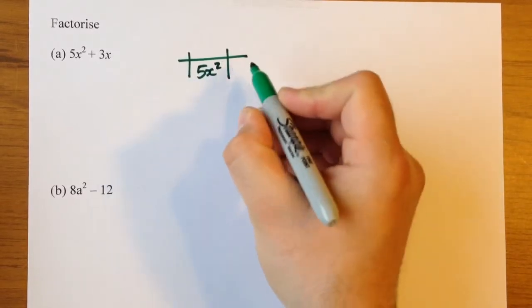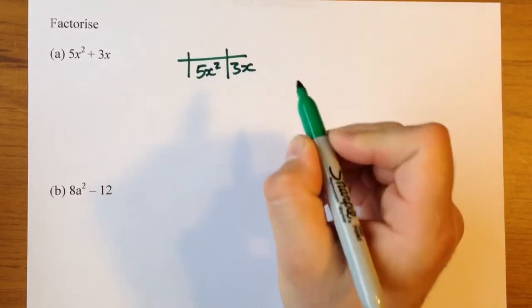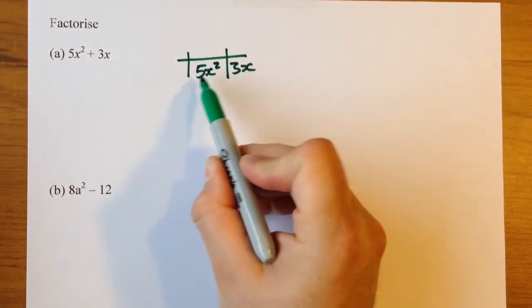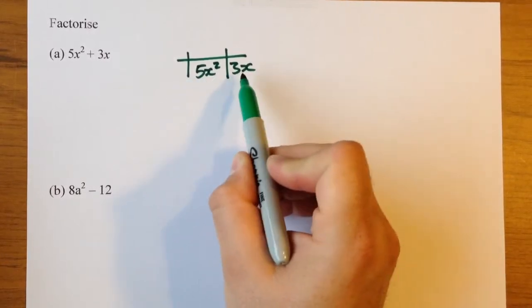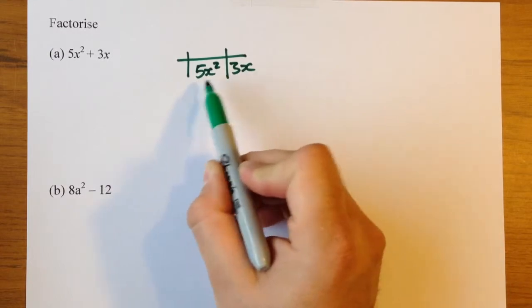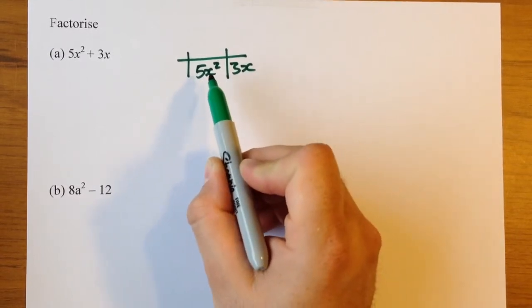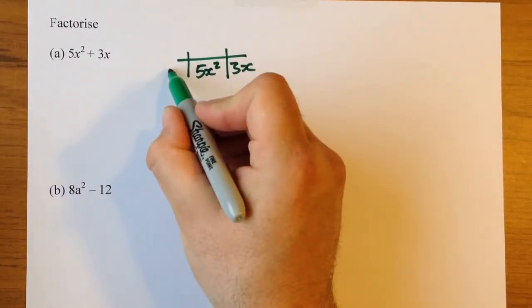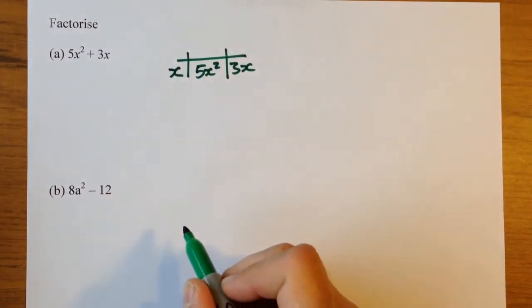So 5x squared and 3x. Now we're looking for something that's in both expressions, both terms. Either the times table they're both in - 3 and 5 aren't in the same times table - or the letter that's in both of them. In this case, it's the letter, so we take the x outside.